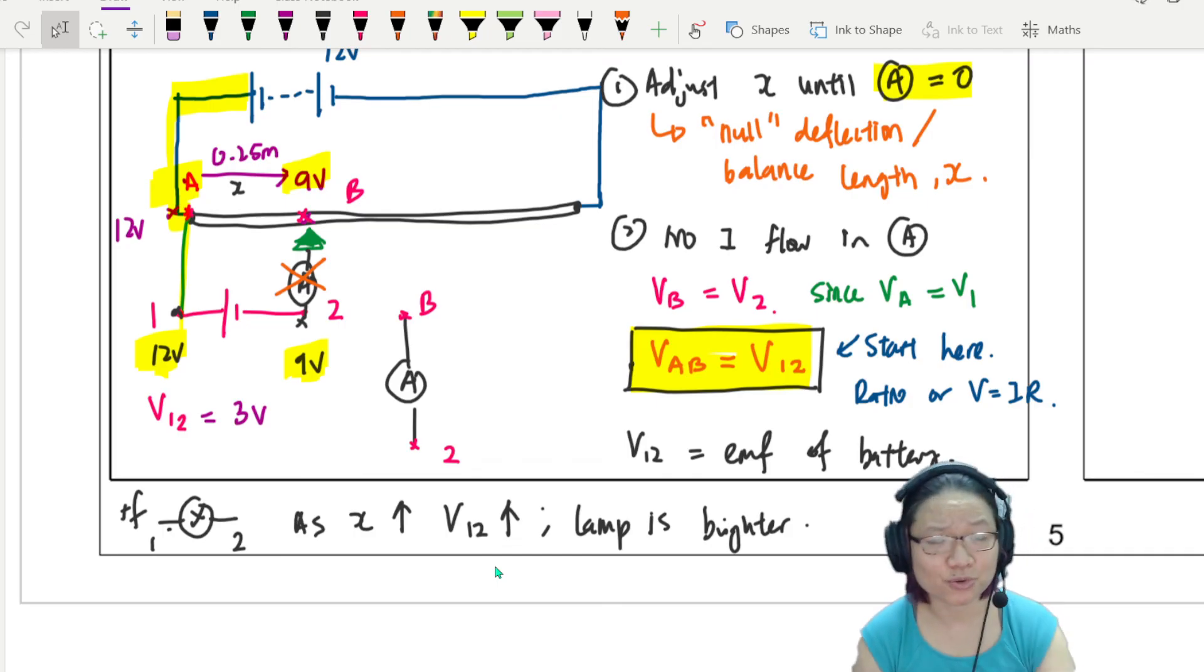So if VB is equal to V2 and current doesn't flow, then I can talk about a few things. Number one, for example, if VB and V2 is the same, and also since VA is equal to V1, because they both have direct connection to the battery. So I can say that the potential difference of A, B is the same as the potential difference of terminal 1 and 2. Now between 1 and 2, I can put anything. Anything I can put there.